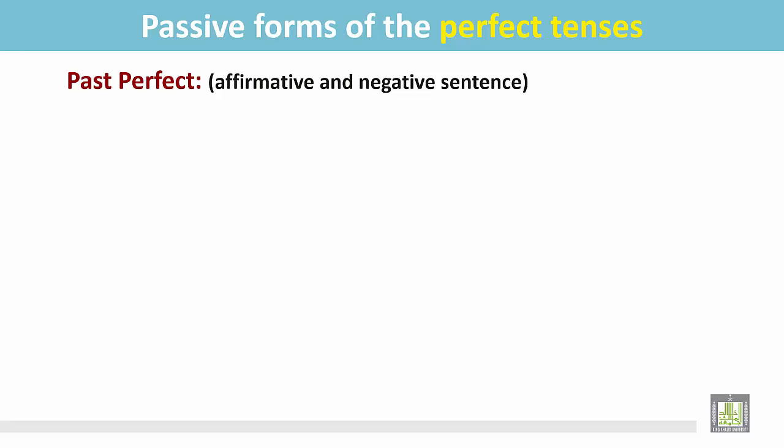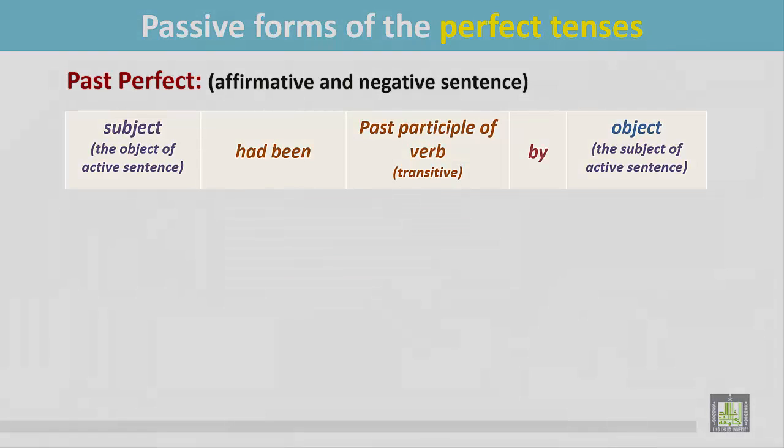Past perfect — affirmative and negative sentences. See the structure. The sentence begins with the subject, which is the object of the active sentence, then 'had been.'